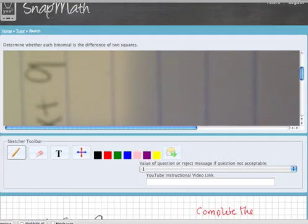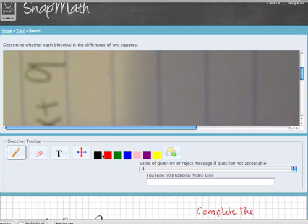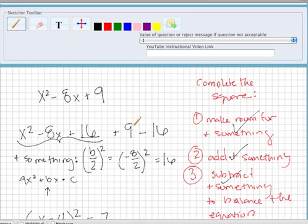But if we are just taking the question at face value, this is not a binomial. Therefore, the binomial is not a difference of squares because it's a trinomial. So thanks again for sending your questions, Samantha. And I look forward to answering more of your questions using SnapMath in the future. Thanks.